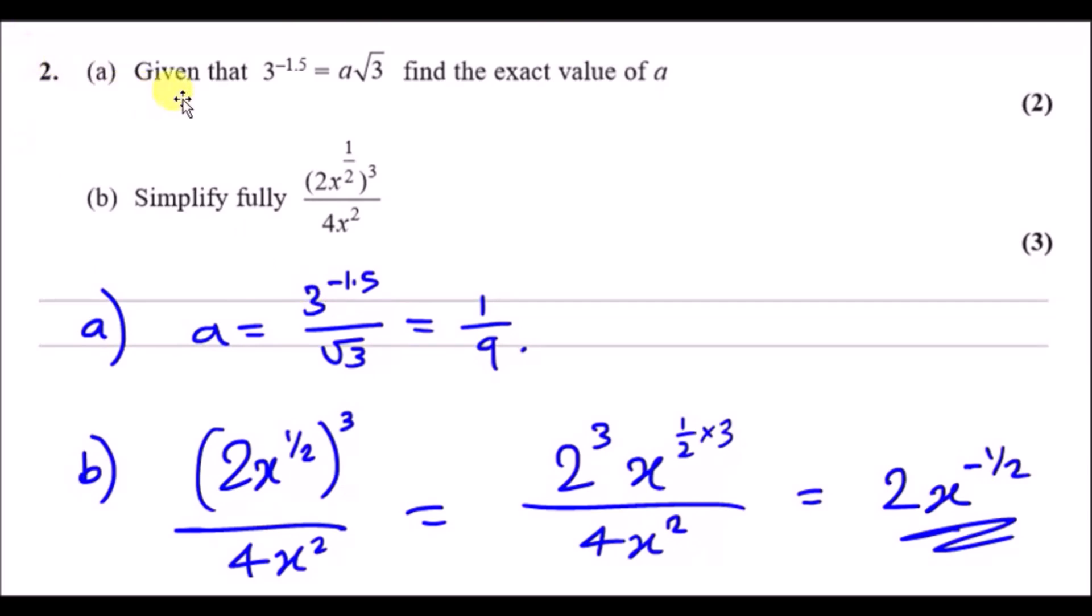Question 2: Given that 3 to the power of -1.5 equals a√3, find the exact value of a. Now this is straightforward - all you do is make a the subject. So I just went ahead and divided √3 across.